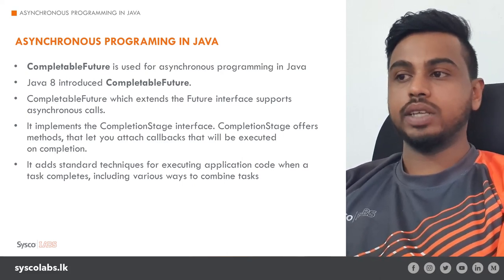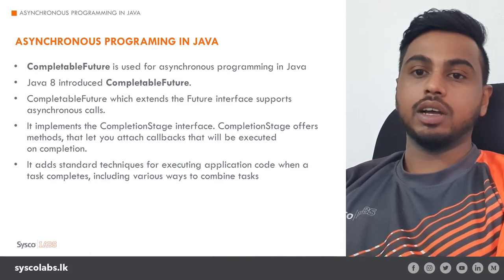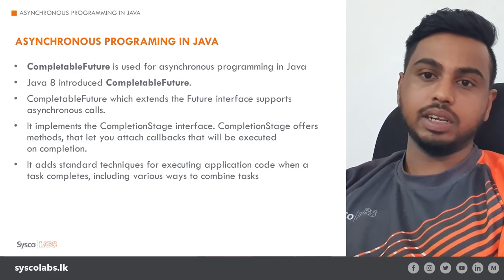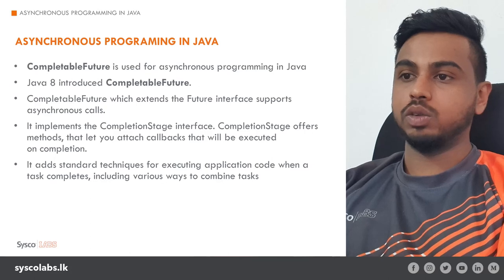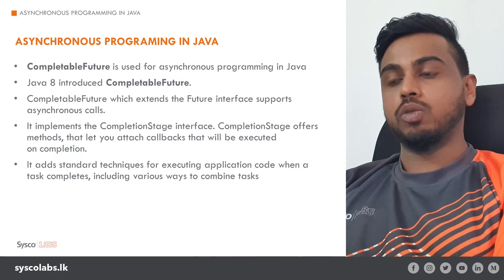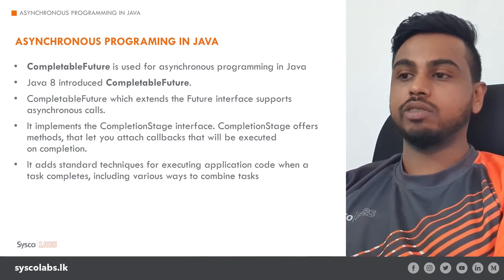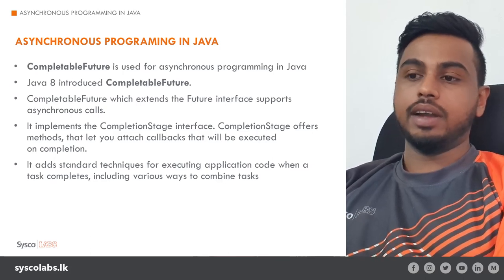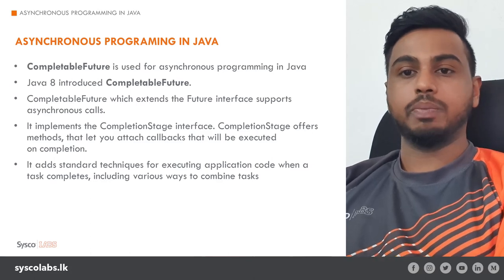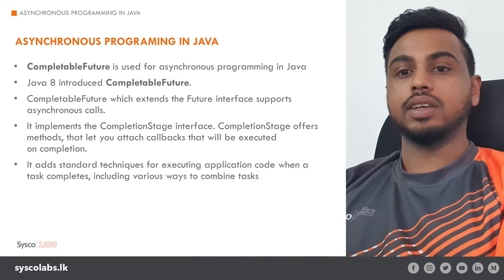CompletableFuture is used for asynchronous programming in Java. Java 8 introduced this feature. CompletableFuture extends the Future interface, which allows us to attach callbacks to CompletableFuture methods. Once the task is completed, these callbacks will be automatically triggered and the code inside them will be executed. CompletableFuture also allows us various techniques and patterns to achieve parallelism and write asynchronous code in Java.